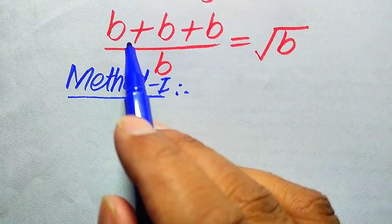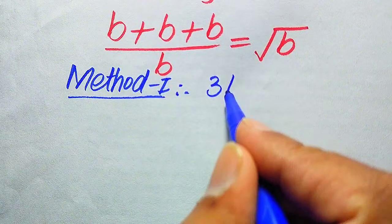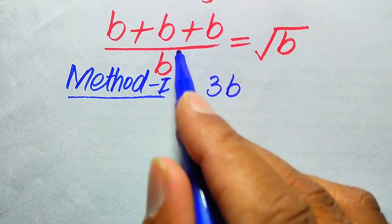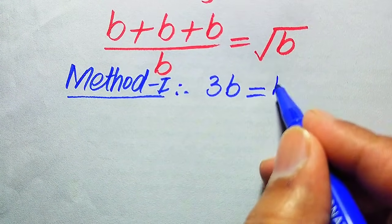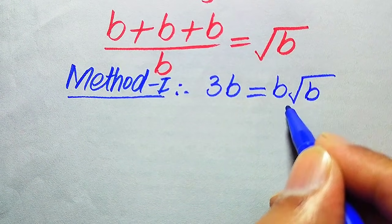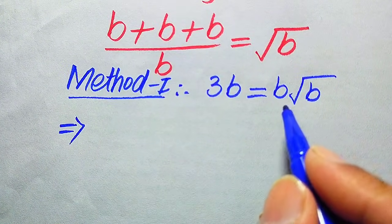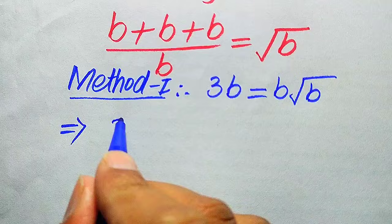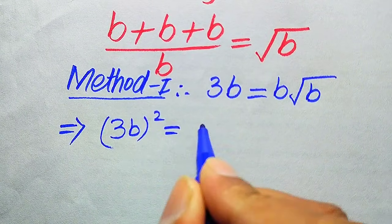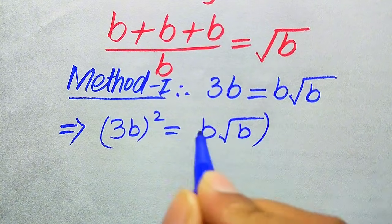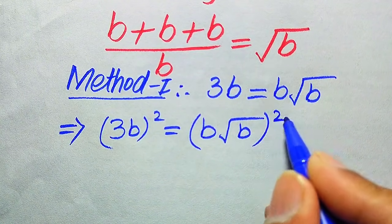In the first method, you see that B is added three times, so it becomes 3B. This 3B divided by B, when moved to the right-hand side, is multiplied by the square root of B. To remove the square root sign from the right-hand side, we square both sides, giving us: 3B whole squared equals B times square root of B, whole squared.